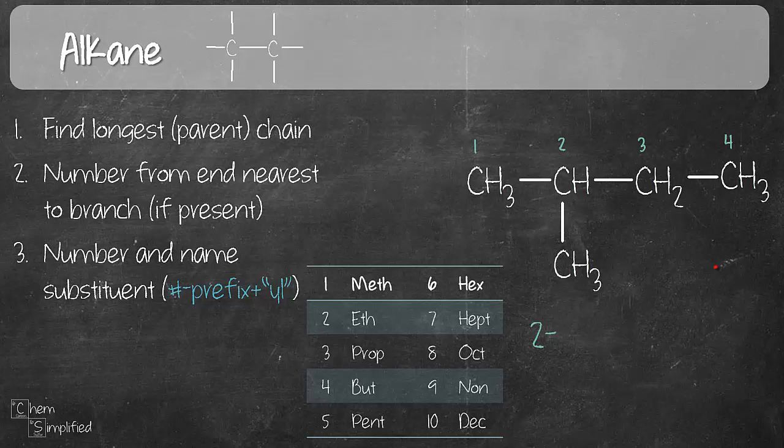So look at our substituent. We have a CH3, so that's one carbon. So that means our prefix is METH. And because this is an alkyl group, it's missing one hydrogen, so this is an alkyl group, so we're going to end it with YL. So far what we have done is we have numbered and named our substituent.